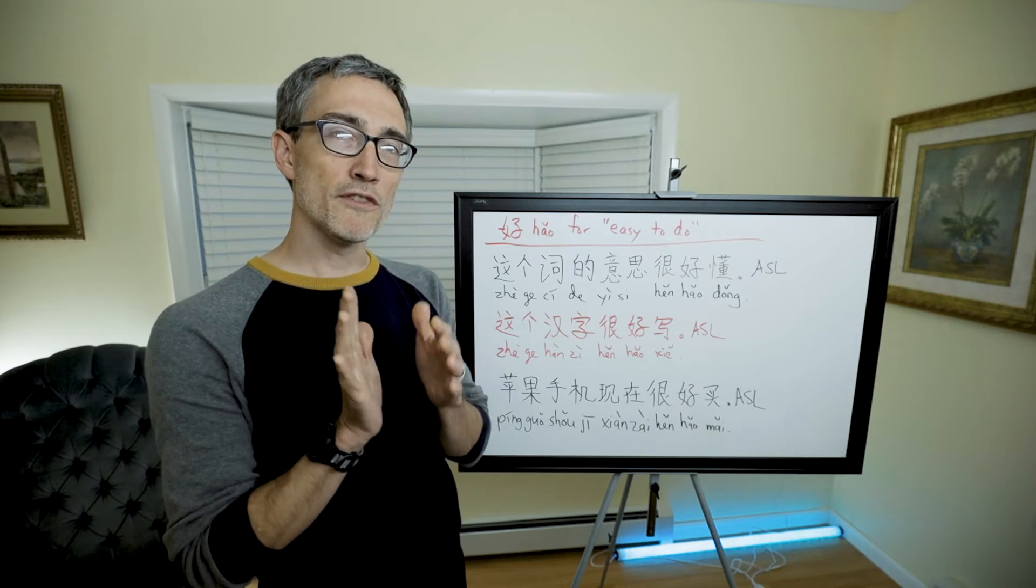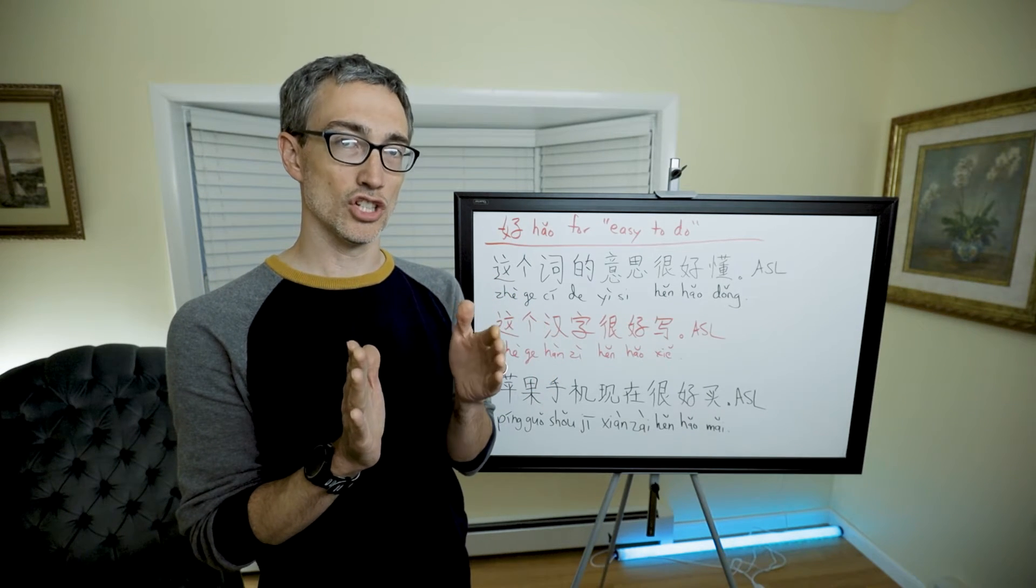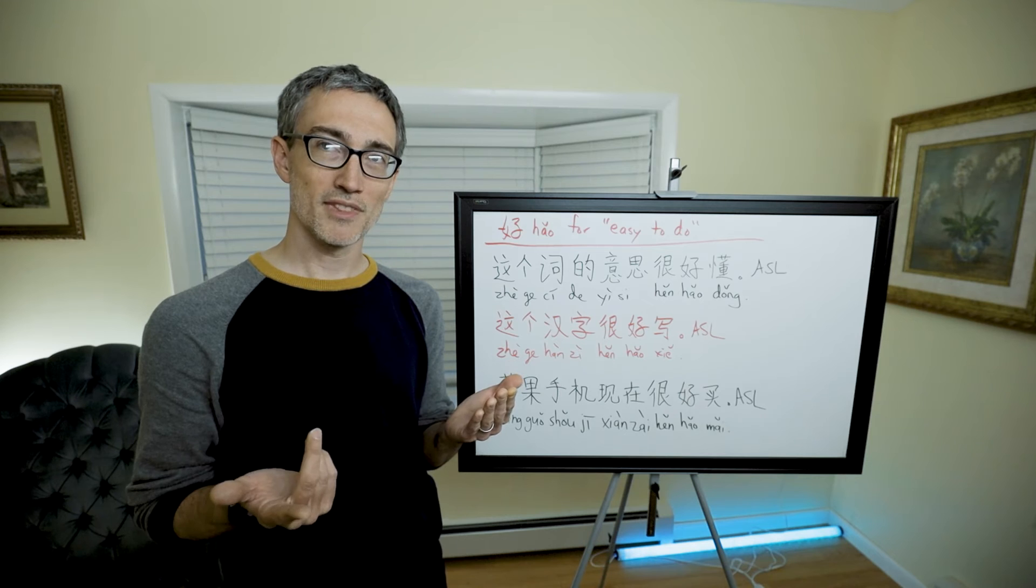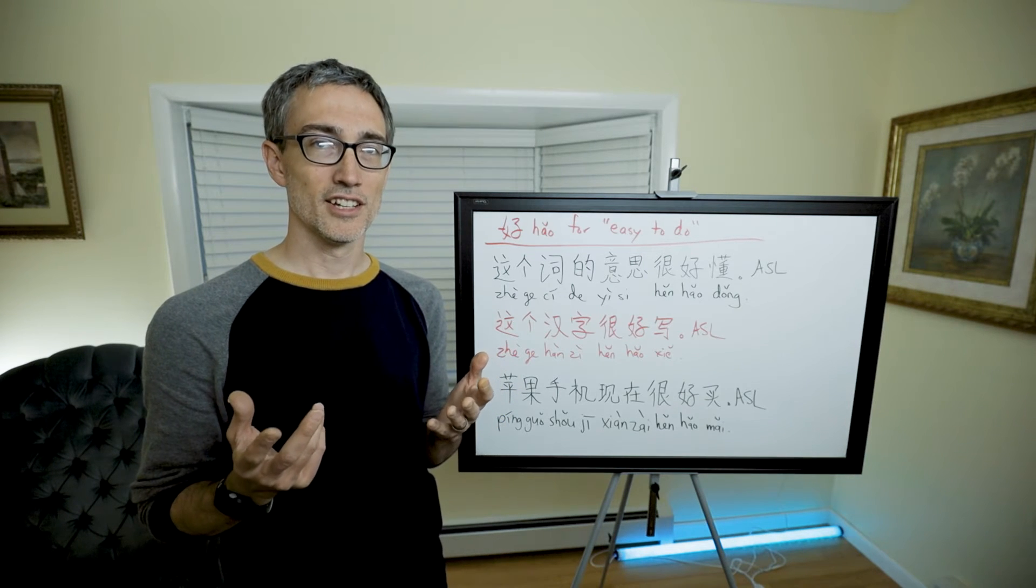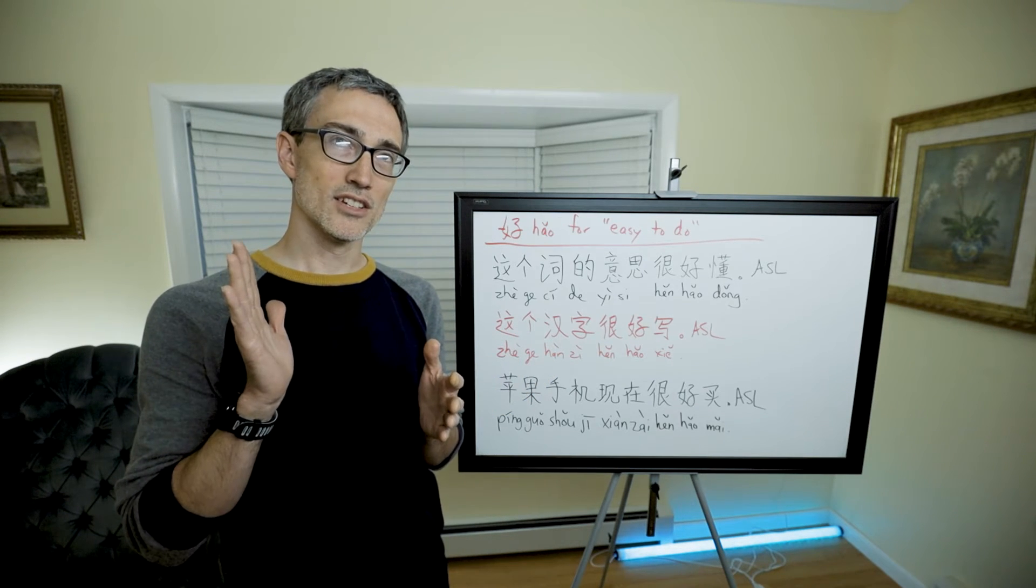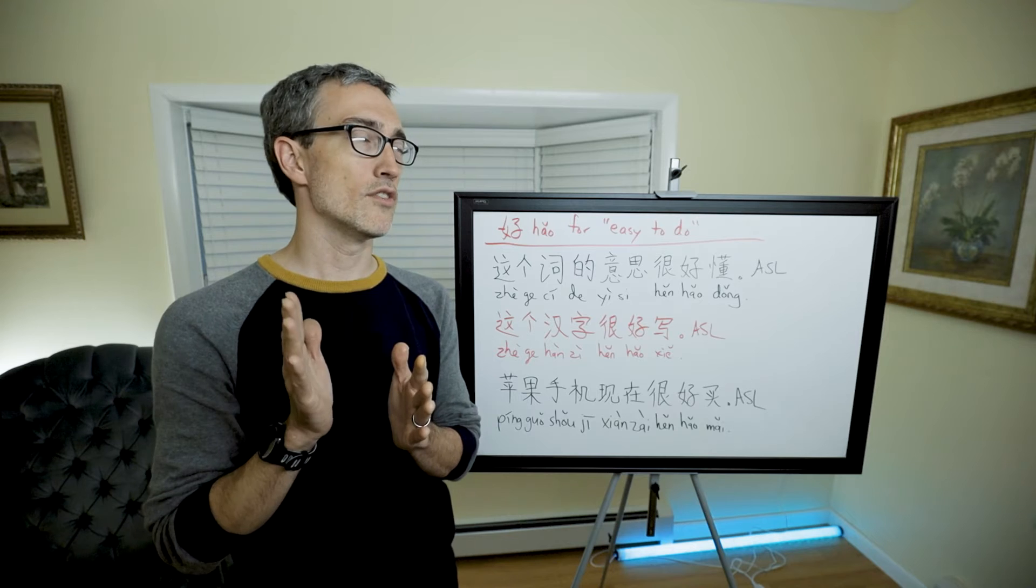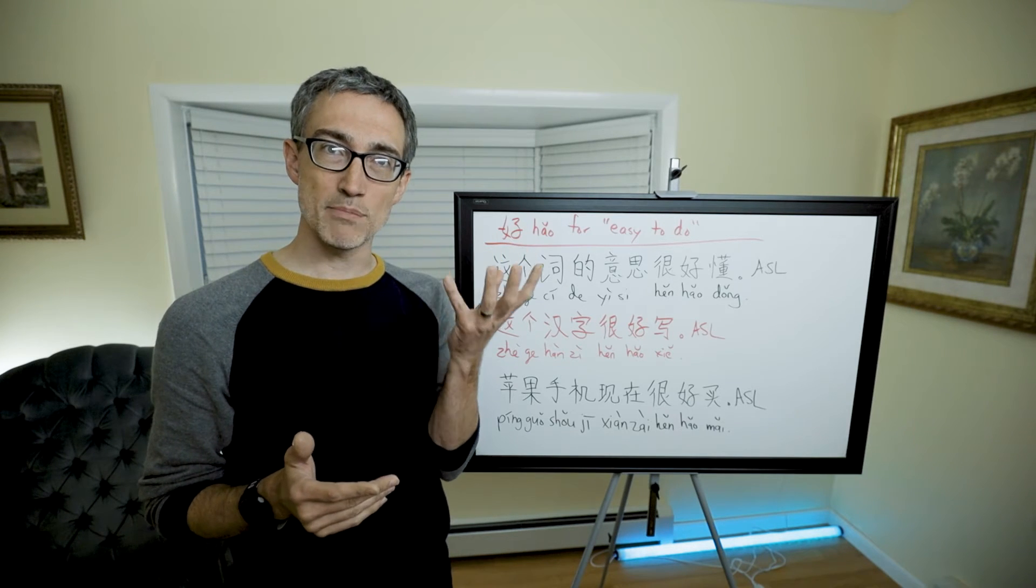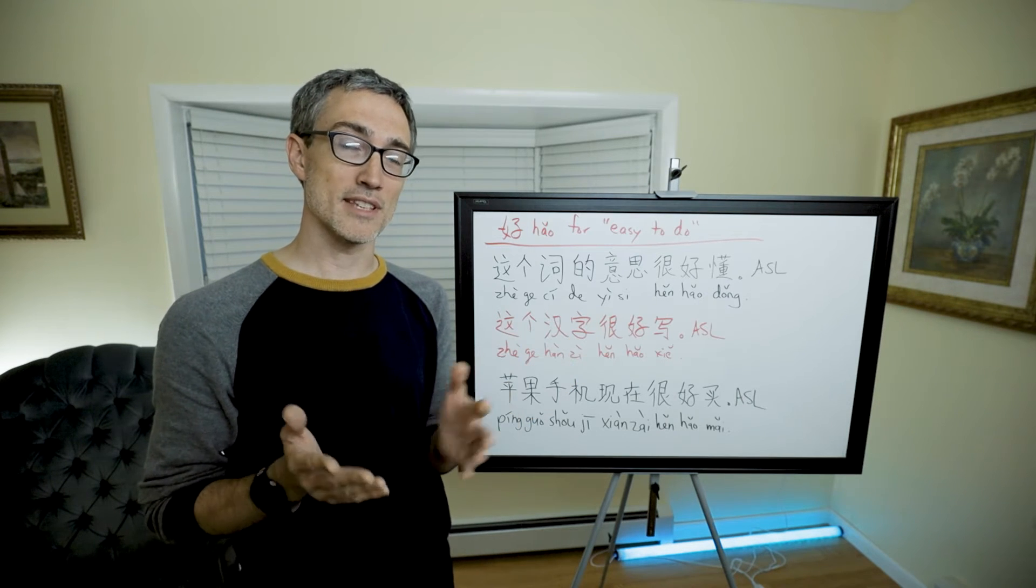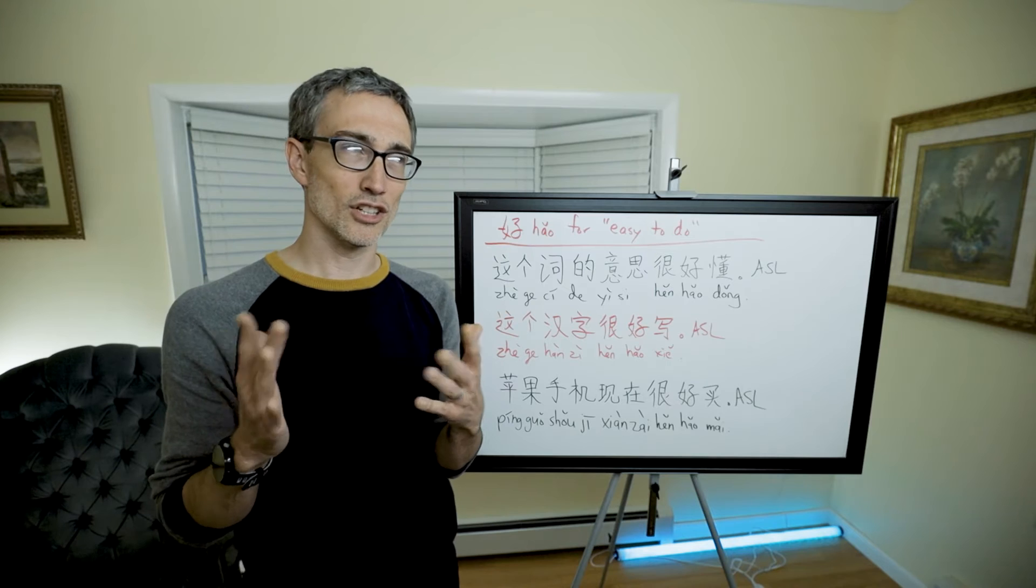I need to point out that 好 before a certain class of verbs does not mean easy, it means good. You have heard a couple of these: 好吃, what does that mean? It means tasty, it's an adjective. 好听 means good to hear, it sounds good. 好闻 means smells good.